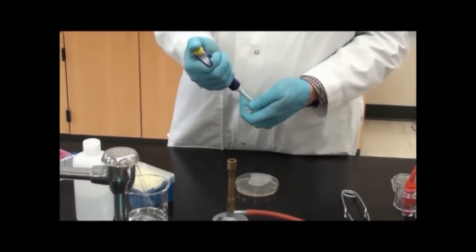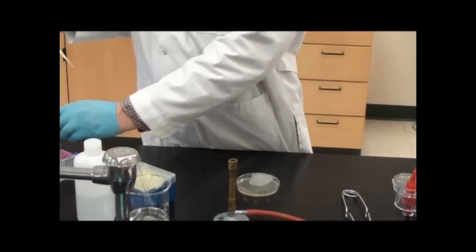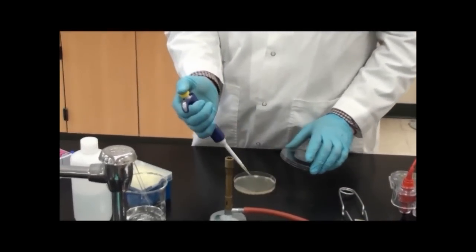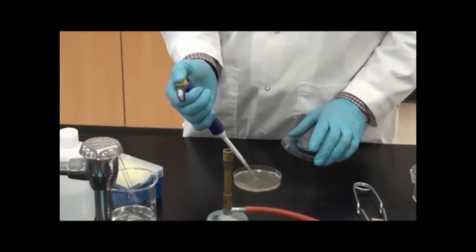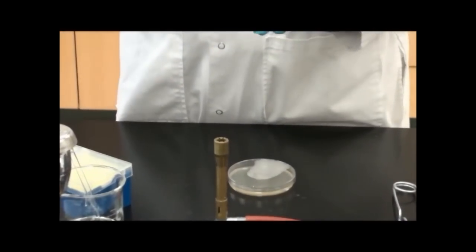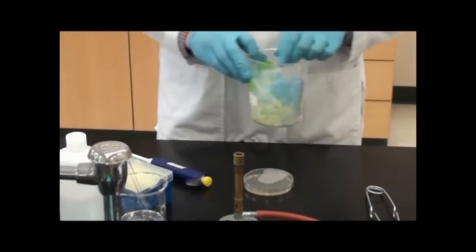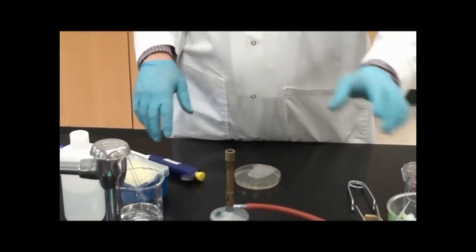I'm going to pull out about 50 microliters of sample and place it right in the middle of the plate. Cover it back up. This has been contaminated so I'll put it in my waste container and autoclave that later.